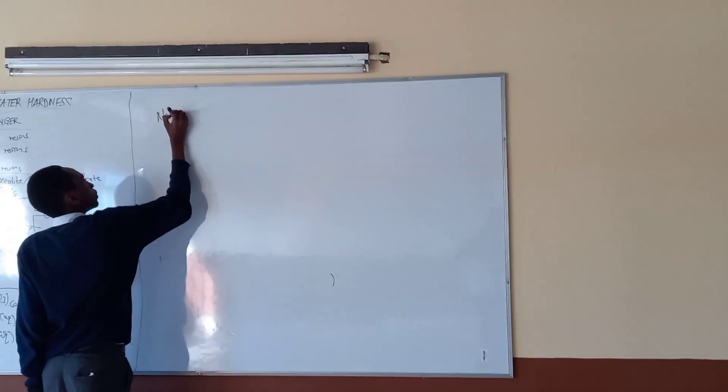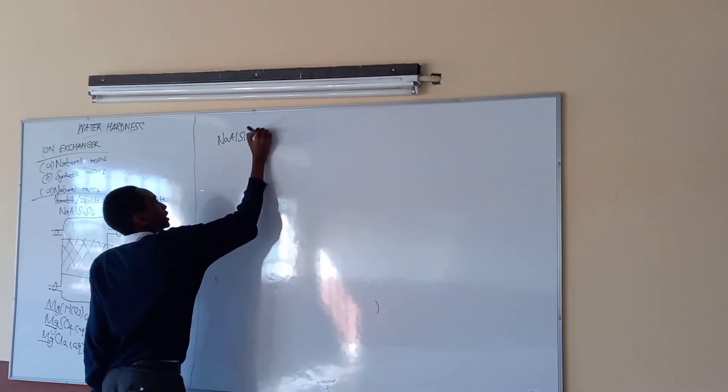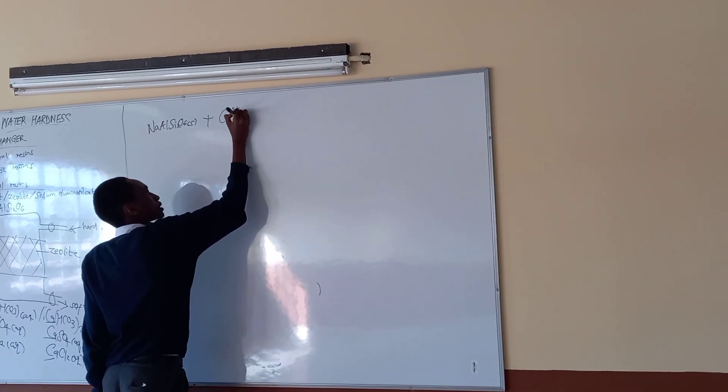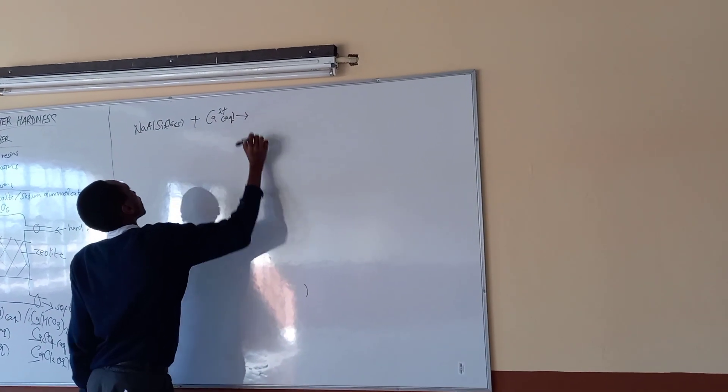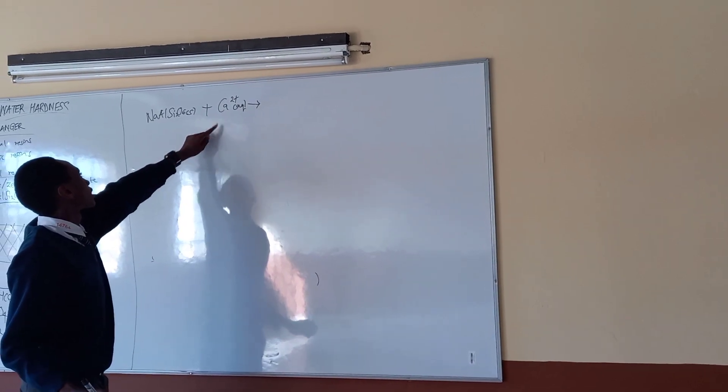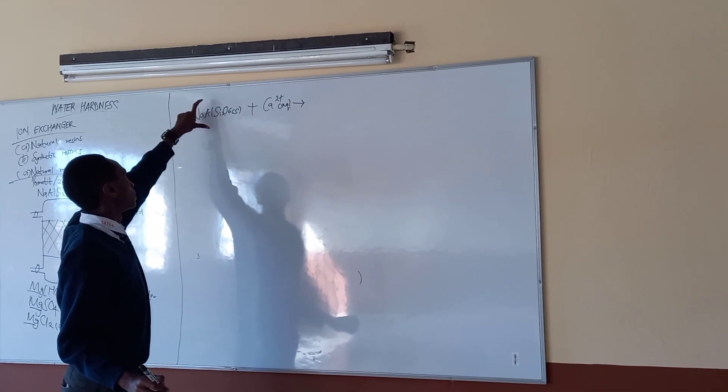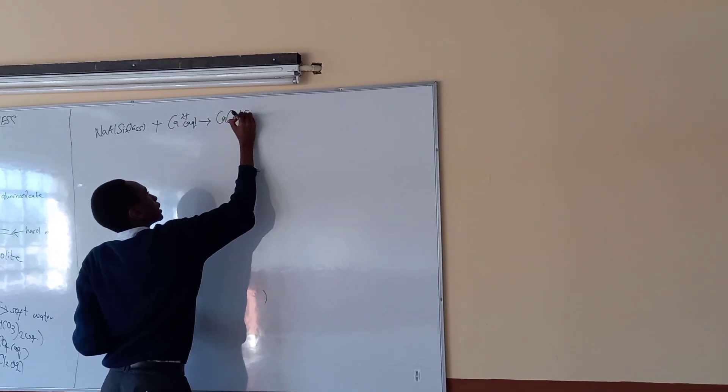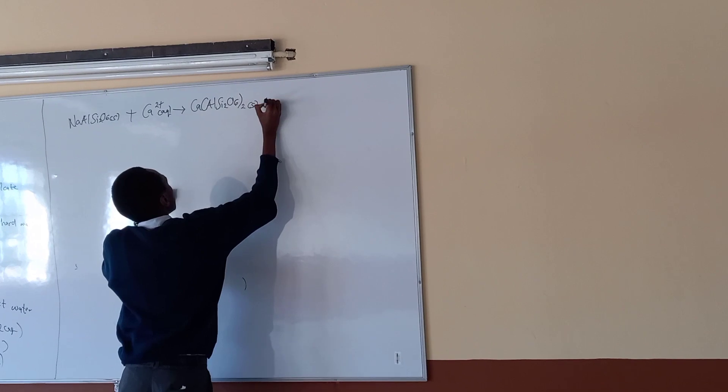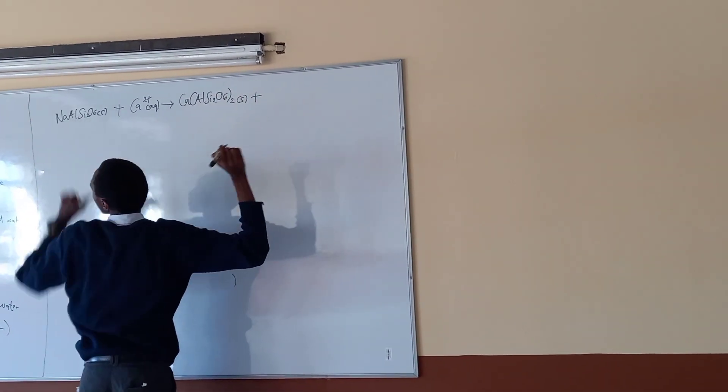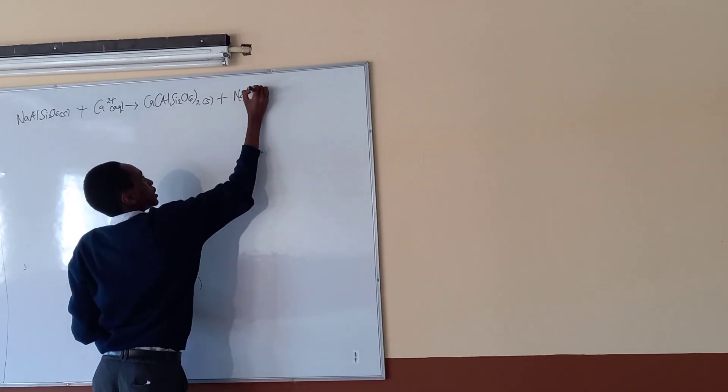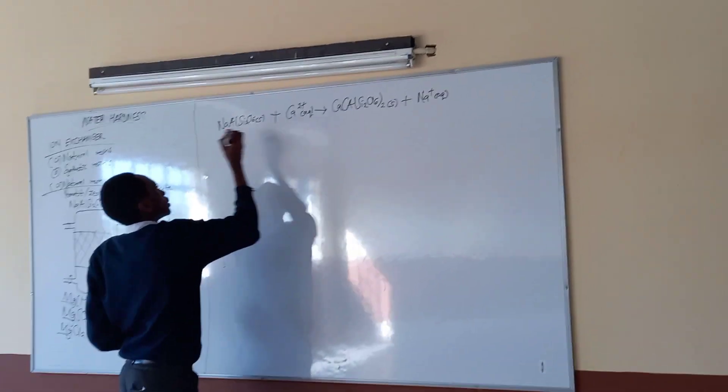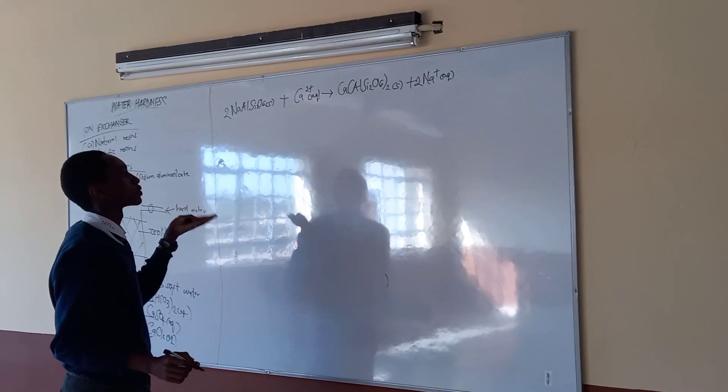So, this is what happens. Sodium alumino silicate solid, then we add water containing calcium ions in aqueous state. The calcium gets to replace sodium in the aluminum silicate. So what we get to have is calcium aluminum silicate solid plus sodium ions in aqueous state. Sodium ions do not cause water hardness. Let's balance the equation. The same applies to magnesium.